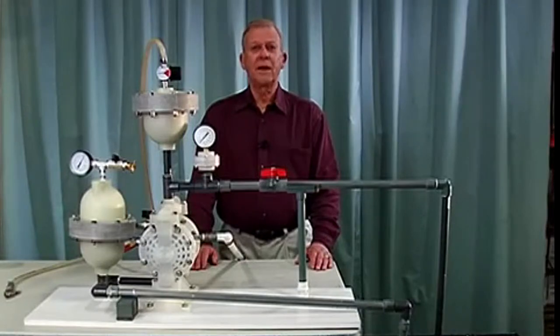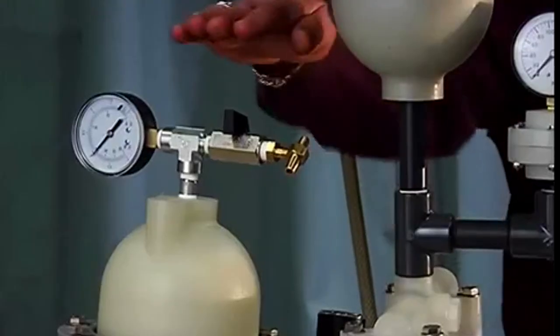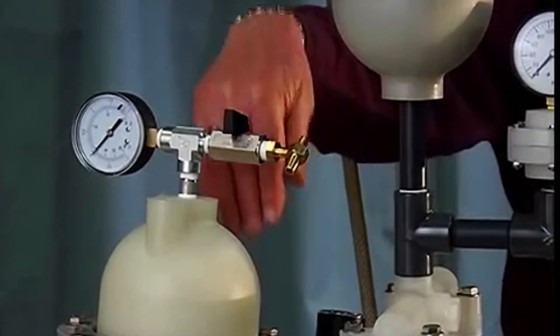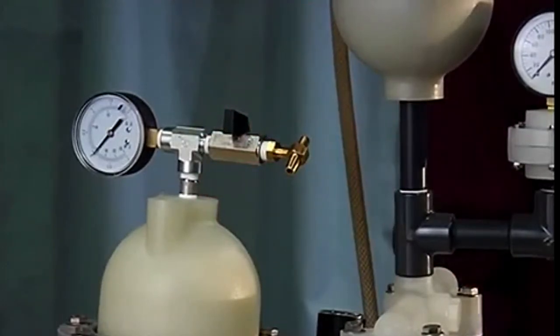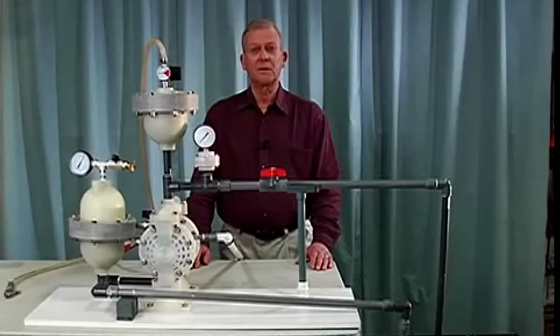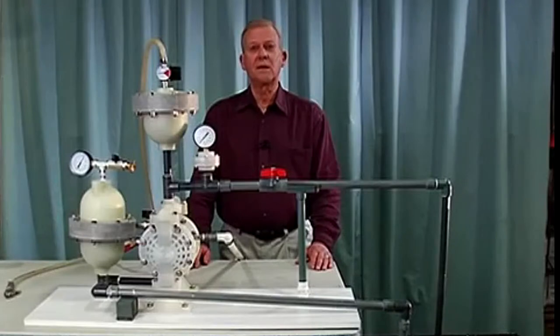On installation, the dampener can be installed horizontally or upside down as pressure is equal in all directions. Vertical is the preference, especially with a slurry or a solids laden product.